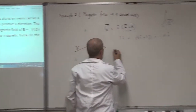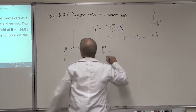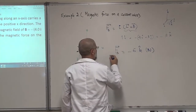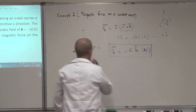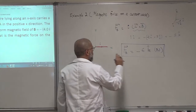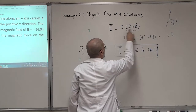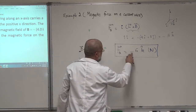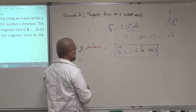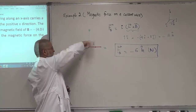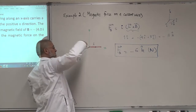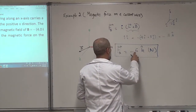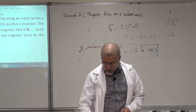Now multiply by the current: 2 ampere times minus 3k gives F = minus 6k newton. You can verify with the right-hand rule: I cross B gives you the thumb pointing inside, confirming the minus sign. The magnitude of the force is 6 newton, and the direction is the negative z-axis, indicated by minus k.